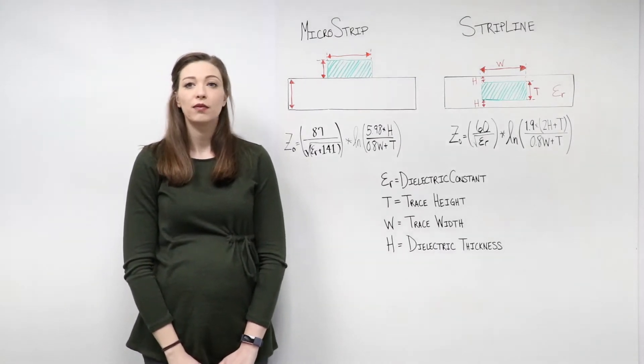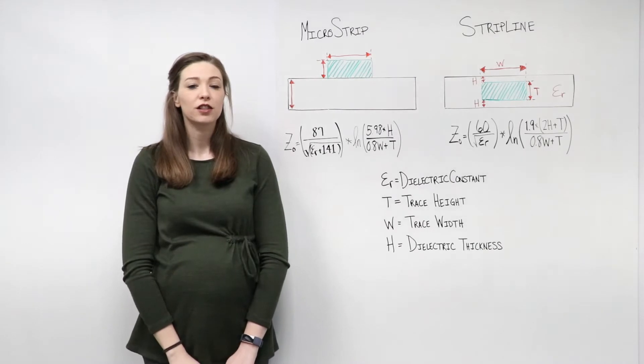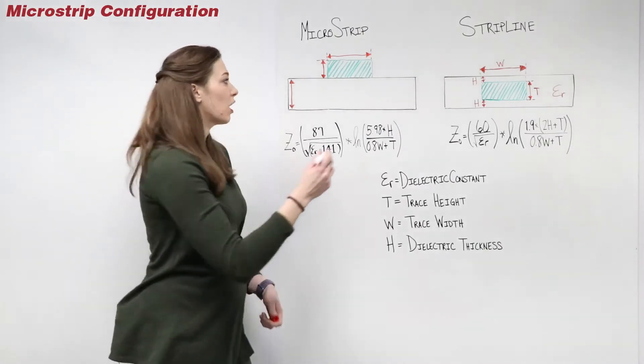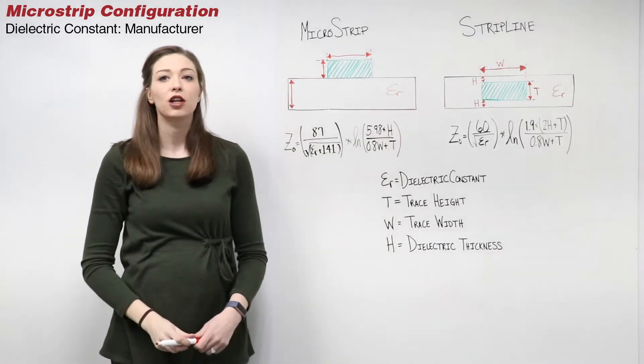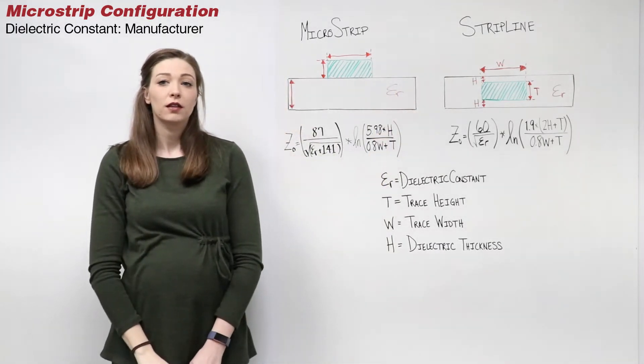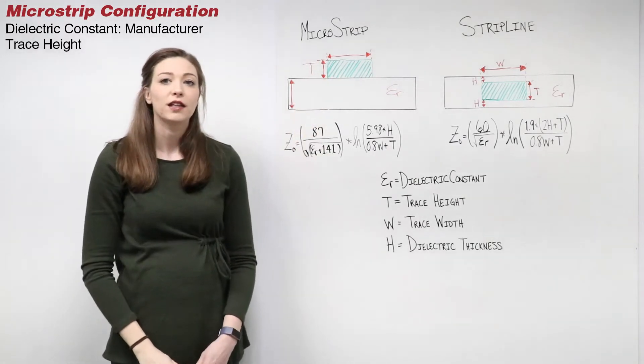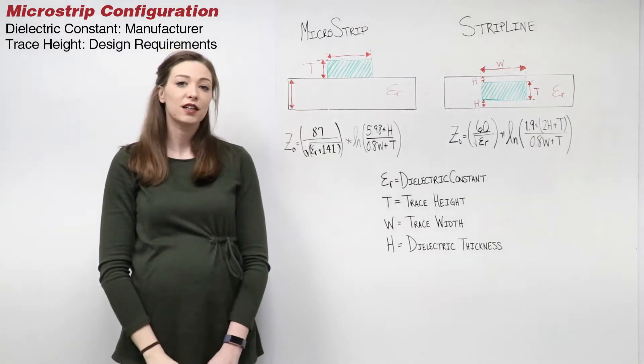But before we get into more detail, let's first take a look at a microstrip configuration. The dielectric constant is typically determined by your manufacturer. The trace height is typically defined by your design requirements and necessary current carrying capacitance.